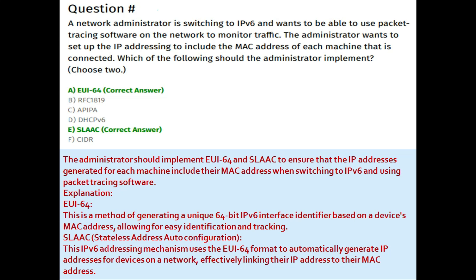The administrator should implement EUI-64 and SLAAC. EUI-64 is a method of generating a unique 64-bit IPv6 interface identifier based on a device's MAC address, allowing for easy identification and tracking. SLAAC (Stateless Address Auto-Configuration) is an IPv6 addressing mechanism that uses the EUI-64 format to automatically generate IP addresses for devices on a network, effectively linking their IP address to their MAC address. The correct answers are A: EUI-64 and E: SLAAC.